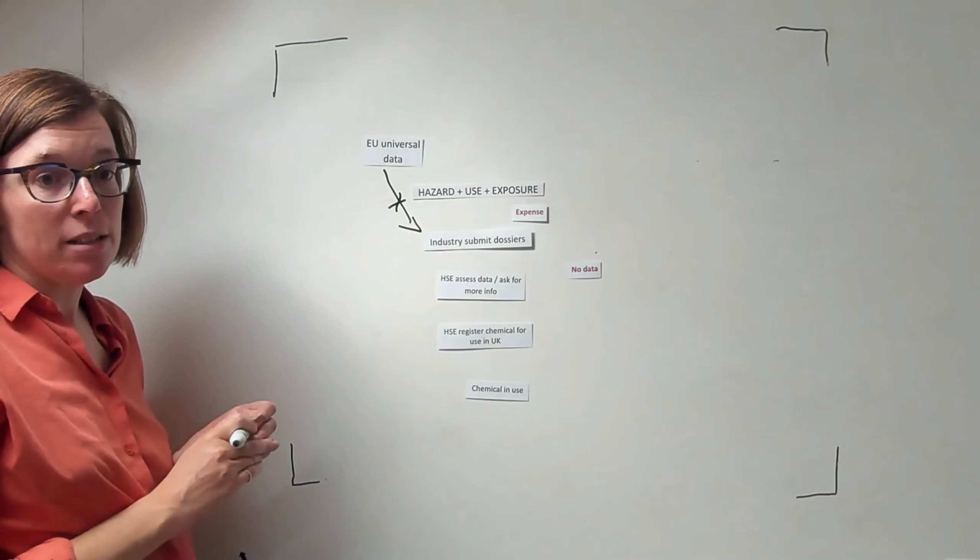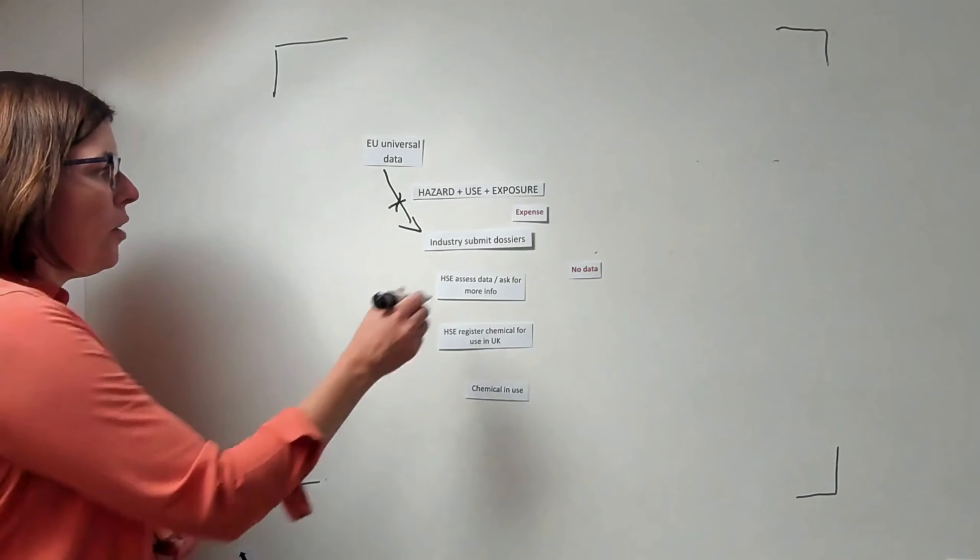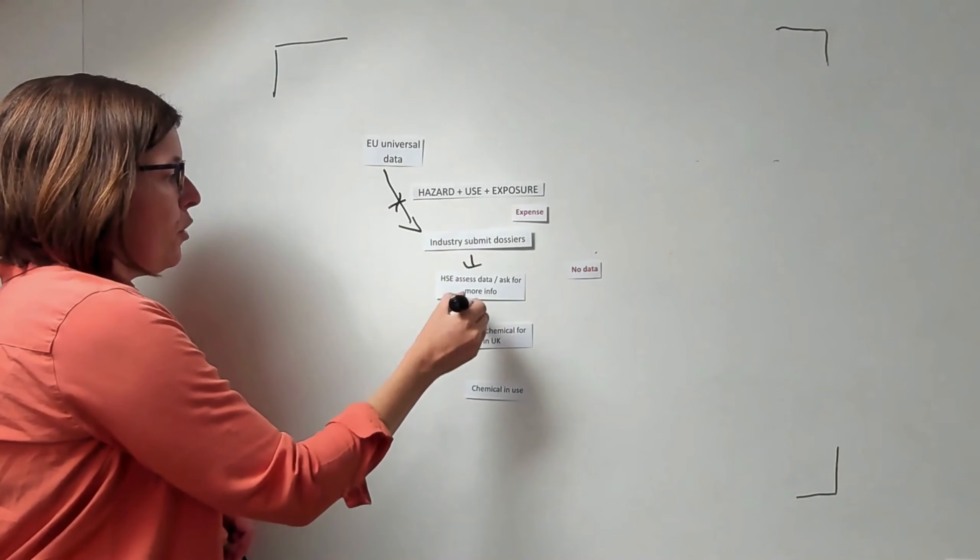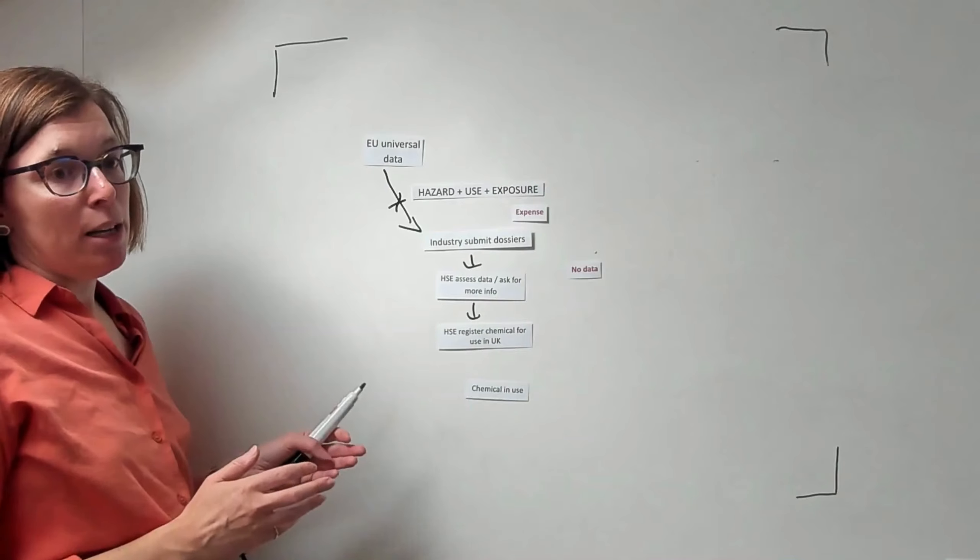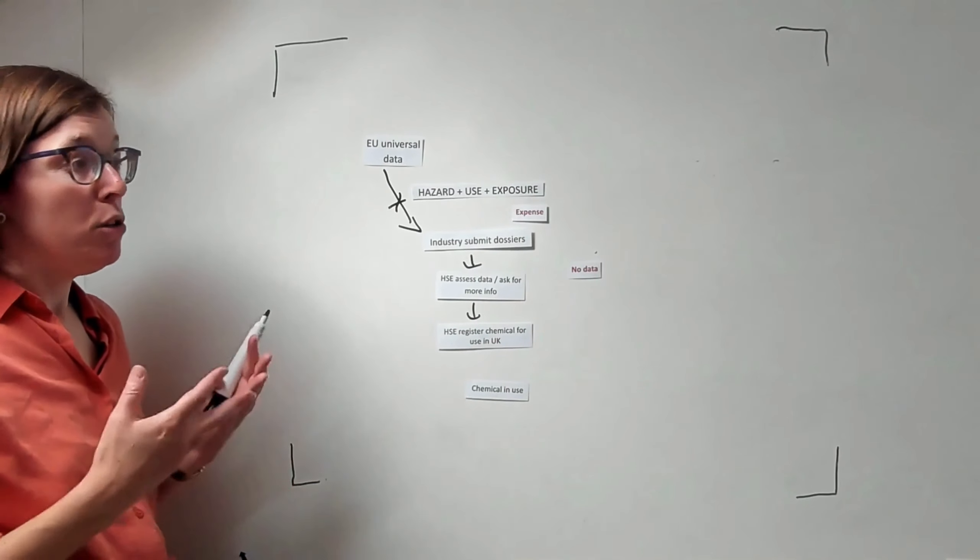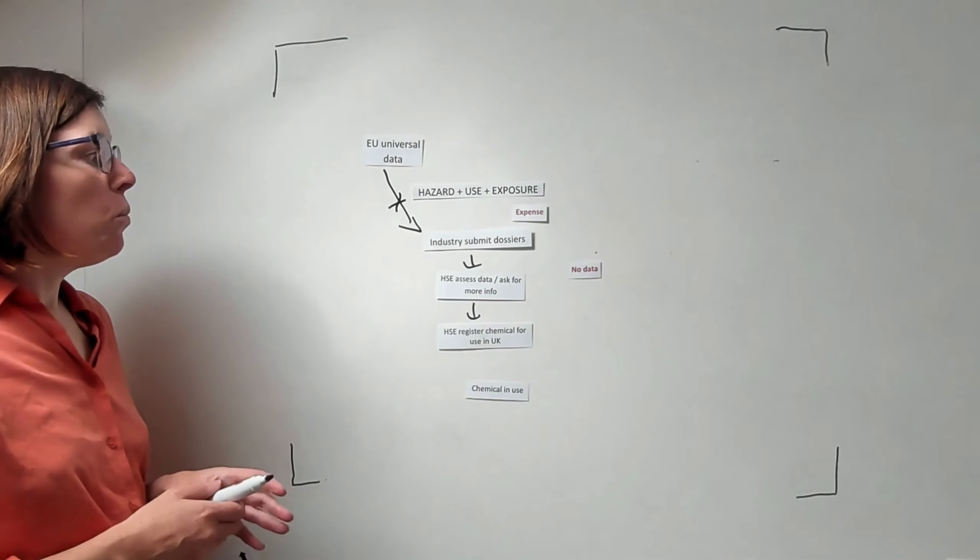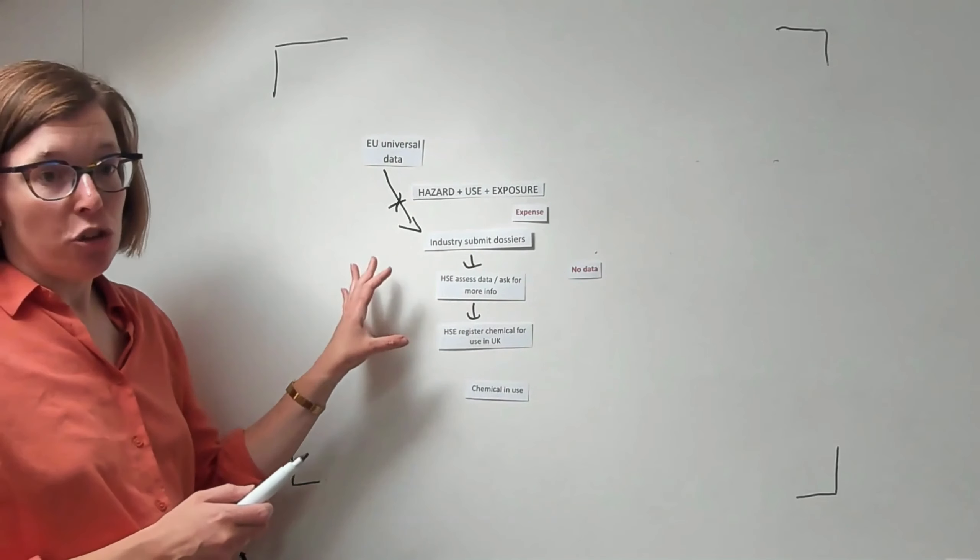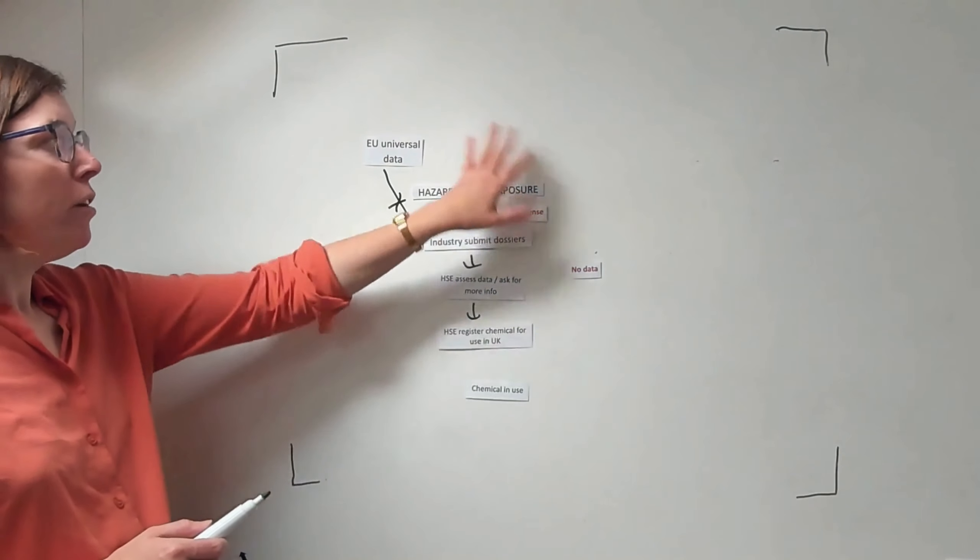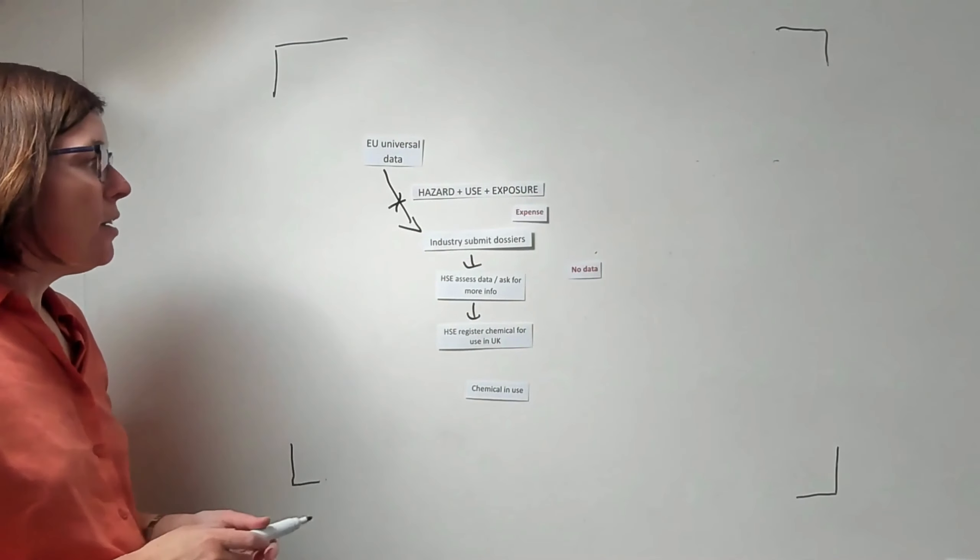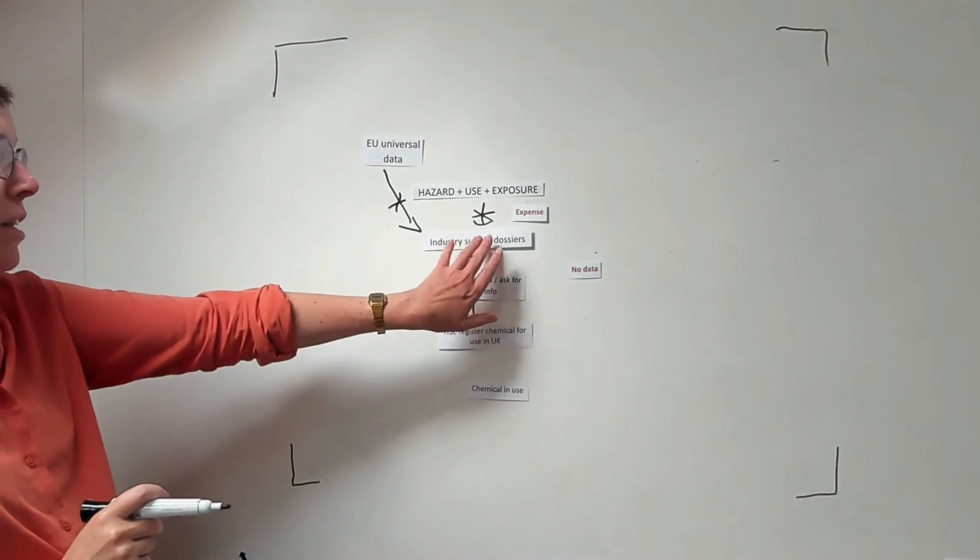Preparing these dossiers is also an expense, so it can make it difficult for industry to justify that expense to operate in the UK. Another of the issues is that although this data is supposed to flow through into the regulator, there is no data currently available about GB or UK use and exposure. That data hasn't been required before and it doesn't yet exist, and it is likely that HSE is going to require GB-specific data on use and exposure rather than the data that already exists on EU use and exposure. So that means that there's another blockage into compiling these industry dossiers.